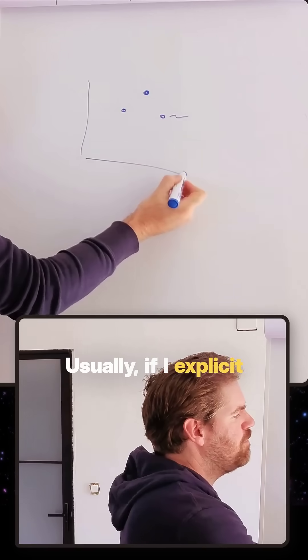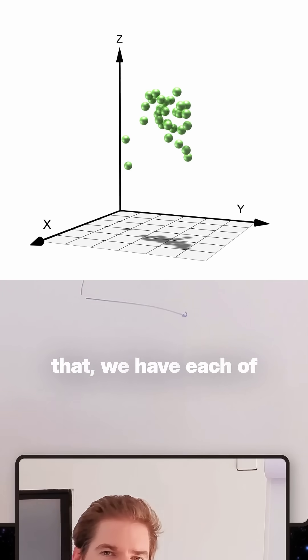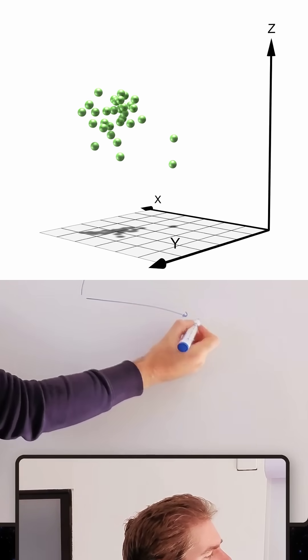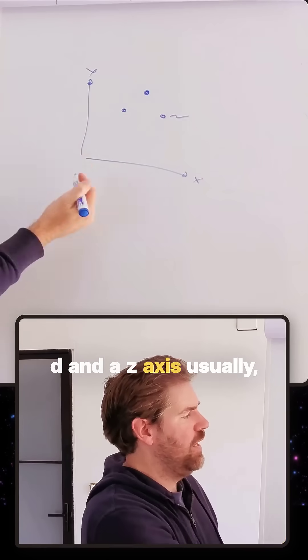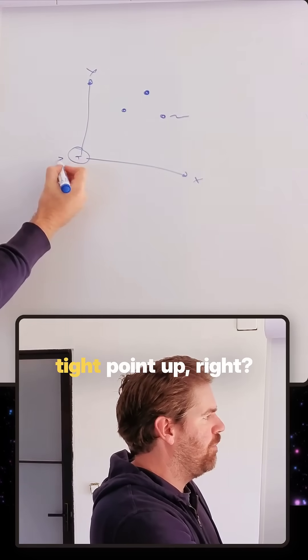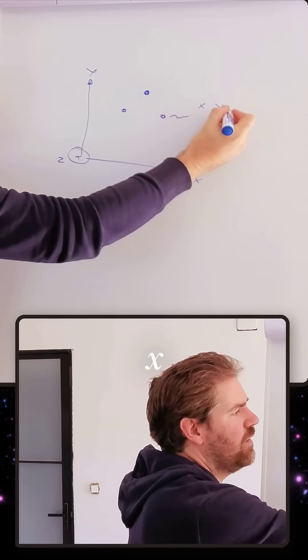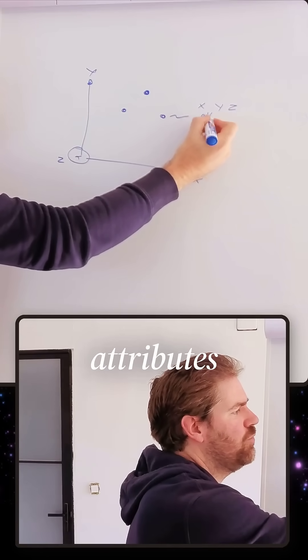Usually, if I explicit that, we have each of our points expressed in an Euclidean space where they will have a coordinate. So if it's x, y into 2D and a z axis usually, that point up, right? So it means that if I take this point, I will have my coordinate x, y, z and a bunch of attributes.